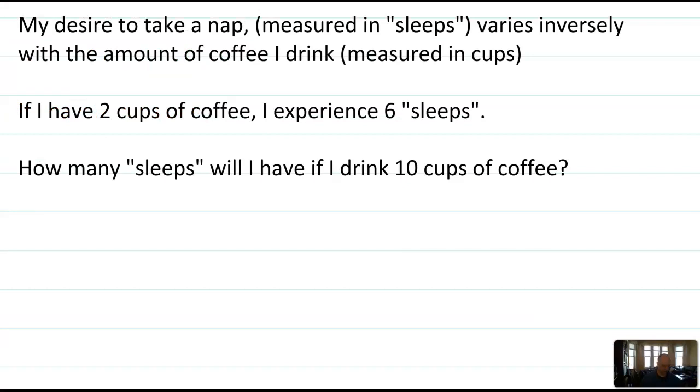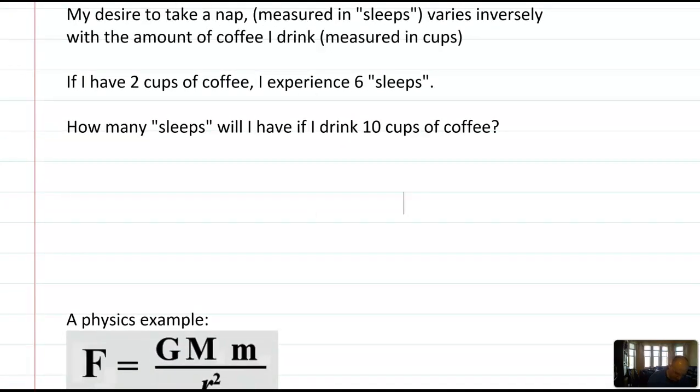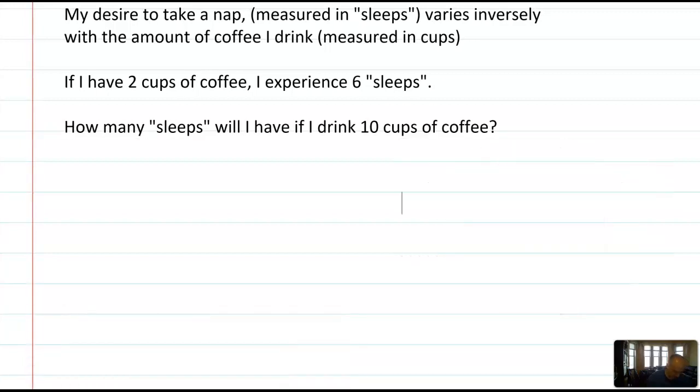One more example here. It's early in the morning, so I have one thing on my mind, and it's really going back to sleep. We'll say my desire to take a nap, measured in an imaginary unit called sleeps, varies inversely with the amount of coffee that I drink, measured in cups of coffee. I noticed from experience that if I drink two cups of coffee, I experience six units of sleep, whatever that means. So I want to know how many units of sleep will I experience if I drink ten cups of coffee. So how would I set this up? I would say that S, my unit of sleeps, is equal to K divided by my variable, which in this case is C for cups of coffee. So K is that constant of proportionality. C is the number of cups of coffee I drink.